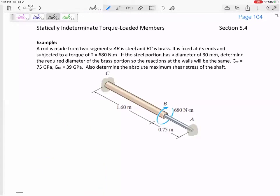All right, so this rod is made from two segments. One is steel, one is brass. It's fixed at its ends. It's got a torque of 680. Steel portion has that diameter.